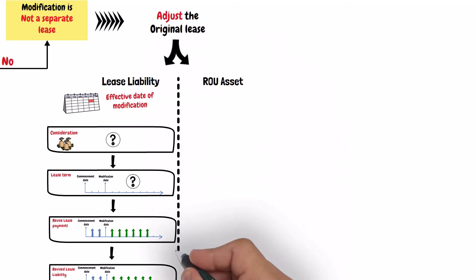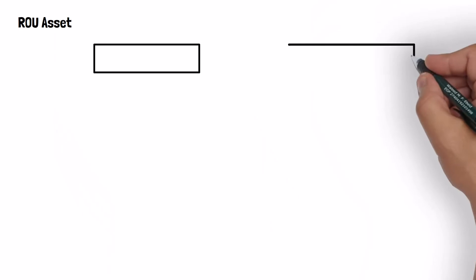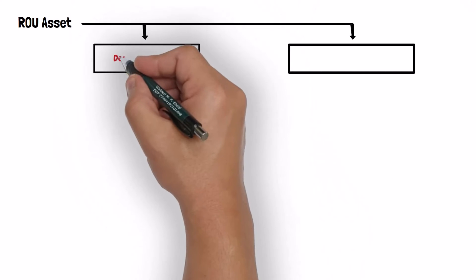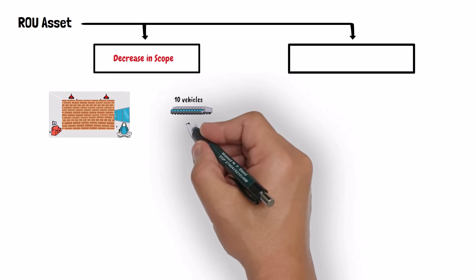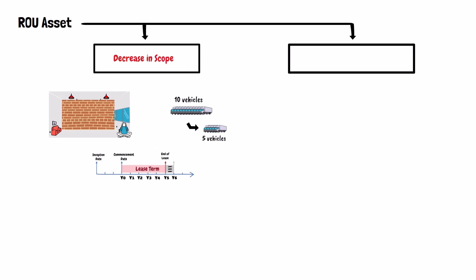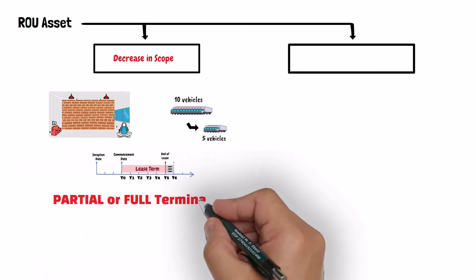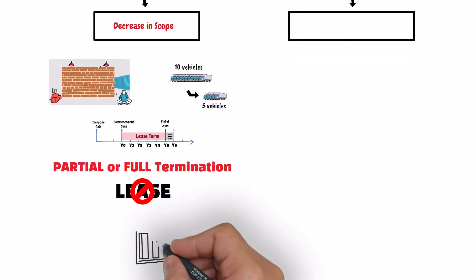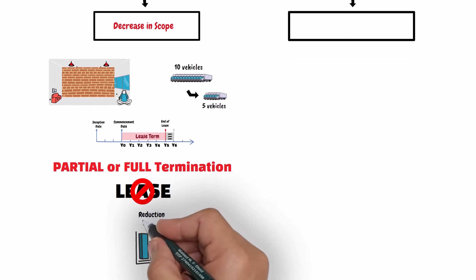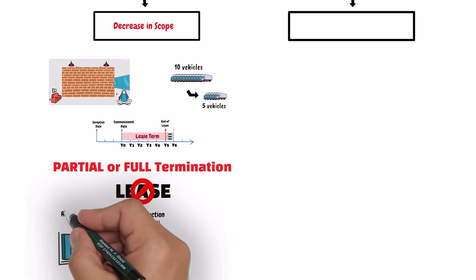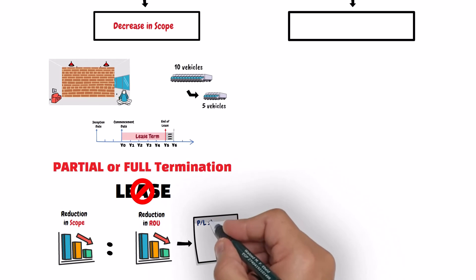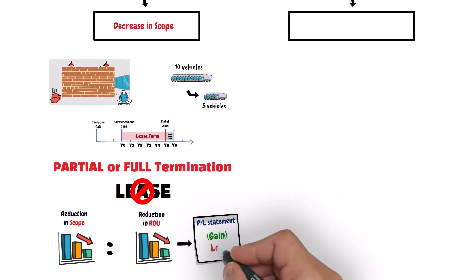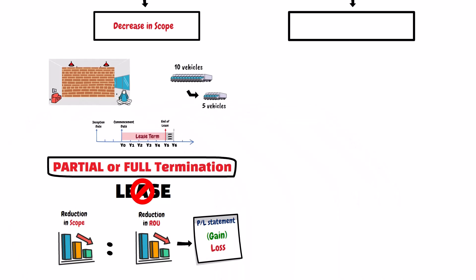On the other hand, the adjustment to the right-of-use asset depends on the nature of the modification. If the modification involves a decrease in the scope of the lease — such as reducing the leased space, reducing the number of leased vehicles, or reducing the lease term — this means there is a partial or full termination of the original lease. In this case, you should calculate the reduction in the carrying amount of the right-of-use asset in proportion to the decrease in scope, then recognize in profit and loss the gain or loss resulting from that partial or full termination.